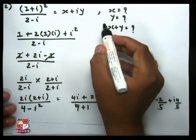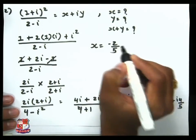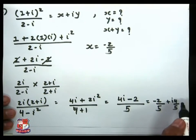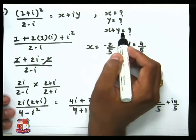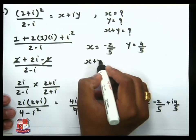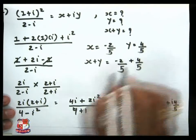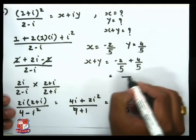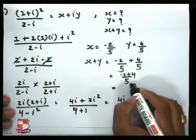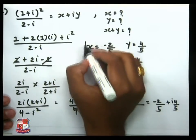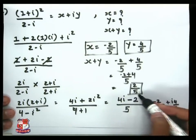Arranging into x + iy form: (−2/5) + i(4/5). So x = −2/5 and y = 4/5. Now we find x + y: −2/5 + 4/5. Since the LCM is 5, we get (−2 + 4)/5 = 2/5. So our three results are: x = −2/5, y = 4/5, and the final answer x + y = 2/5.